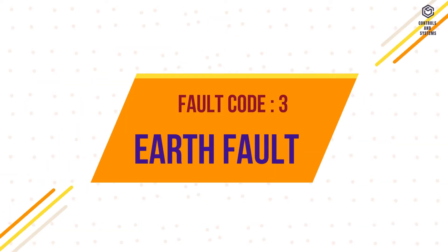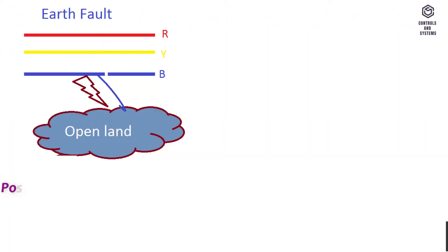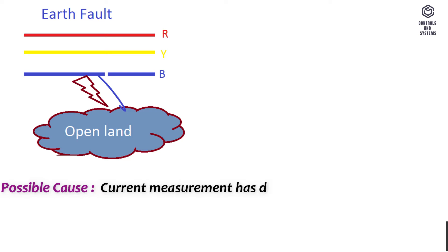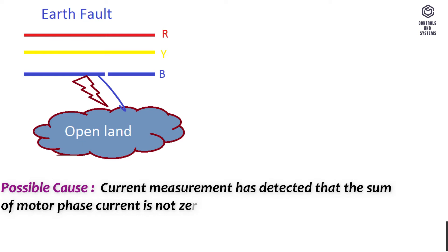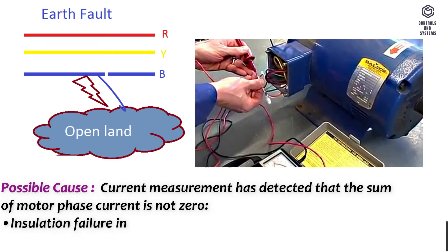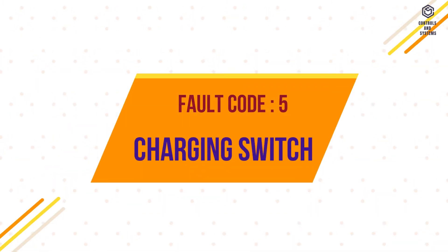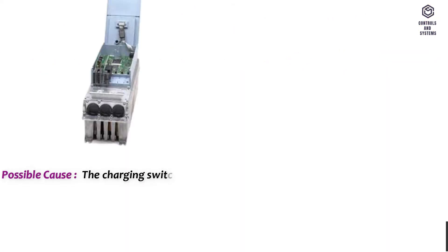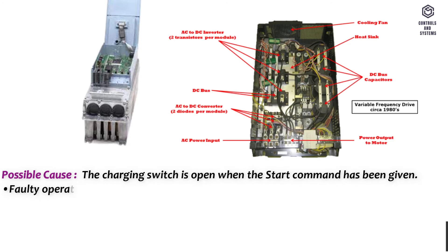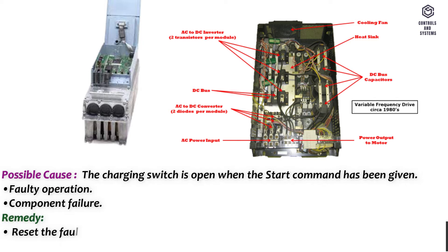Fault code 3 – Earth fault. Possible cause: current measurement has detected that the sum of motor phase currents is not zero, indicating insulation failure in cables or motor. Remedy: check motor cables and motor. Fault code 5 – Charging switch. Possible cause: the charging switch is open when the start command has been given, due to faulty operation or component failure. Remedy: reset the fault and restart.